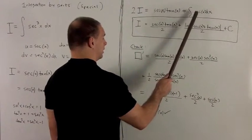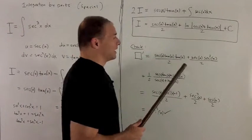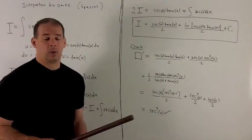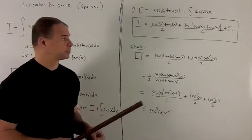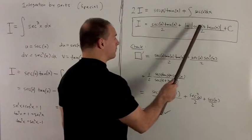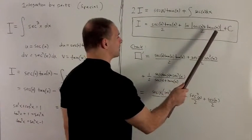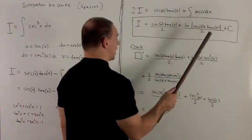Indefinite integral of secant x dx, remember, that's going to be one of our special formulas. It's going to be natural log absolute value of secant x plus tan x plus constant.